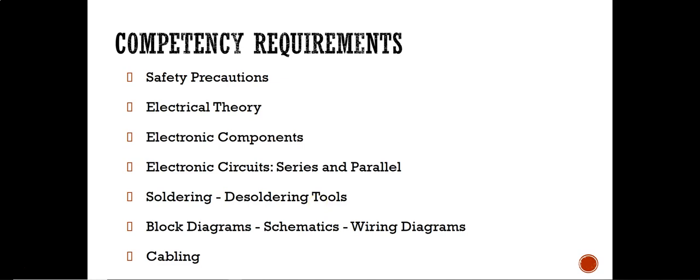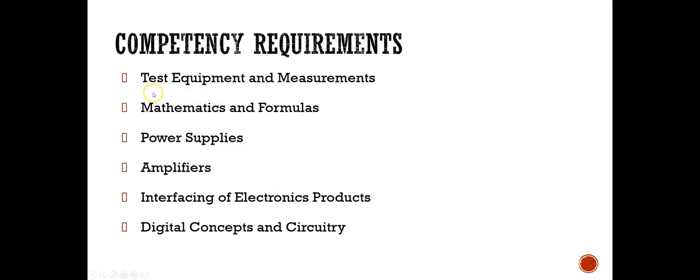Soldering-desoldering tools covers reasons for flux usage and types of solder. Block diagrams, schematics, and wiring diagrams covers how flowcharts work. Cabling covers describing impedance and its causes and explaining reasons for maintaining cable characteristics. Test equipment and measurements covers the oscilloscope and signal generator. Mathematics and formulas covers Ohm's law, power equation, and resistance equations.